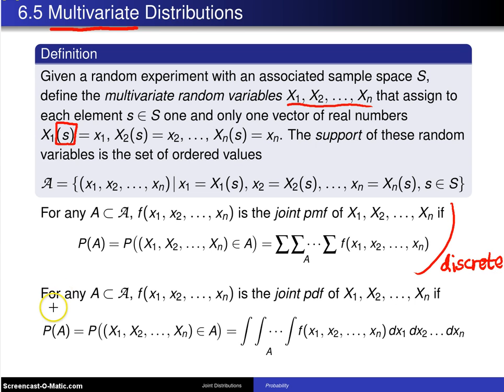And here is the analogous thing for continuous. For any A, f(x₁, ..., xₙ) is a joint pdf of X₁ up to Xₙ if P(A) can be found by doing an n-fold integral of the joint probability density function, and that defines a continuous set of random variables.